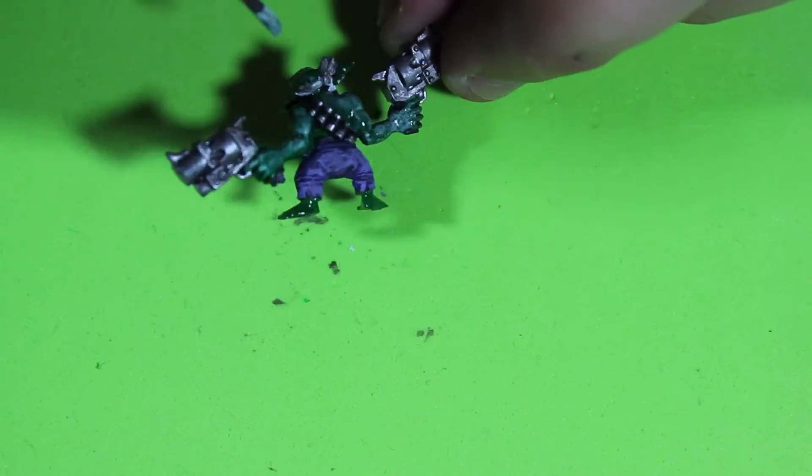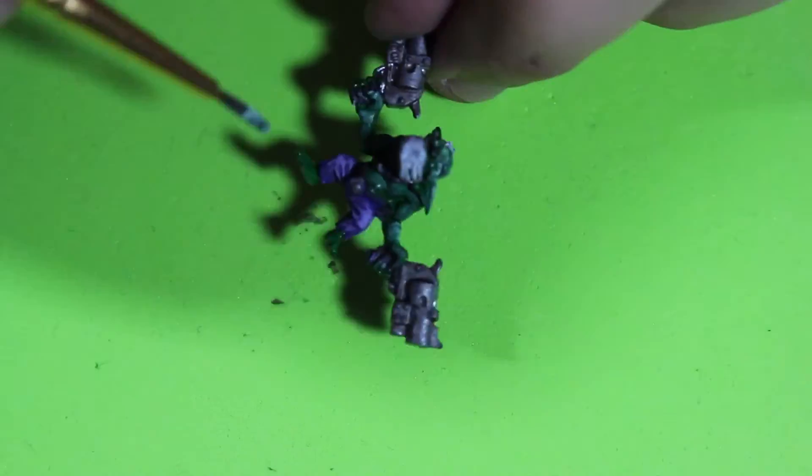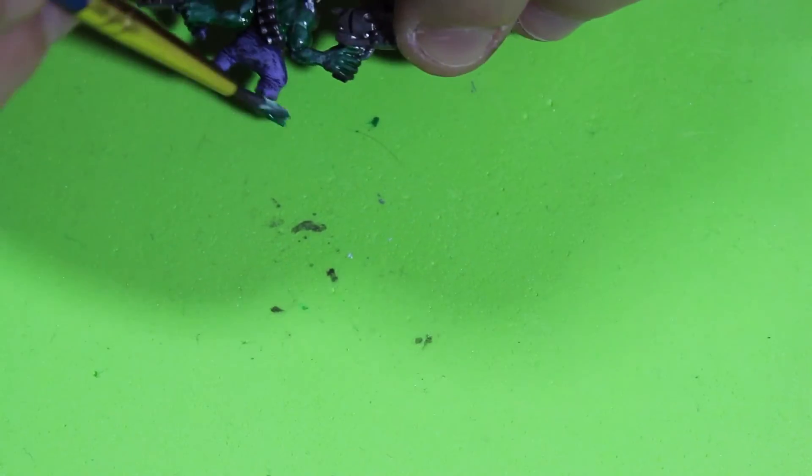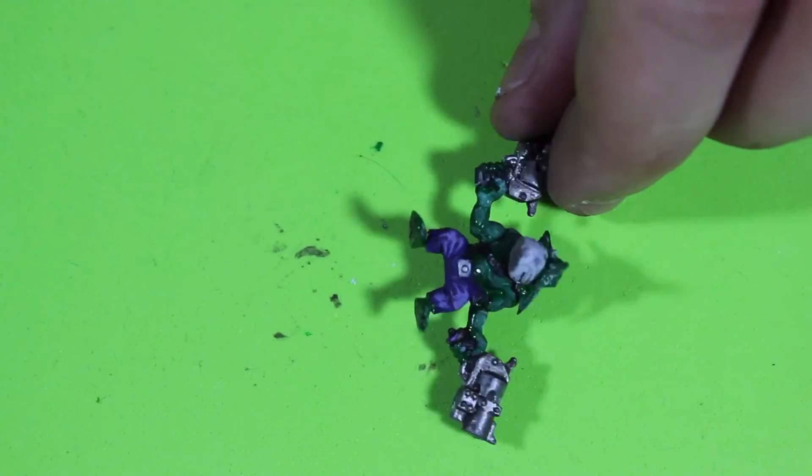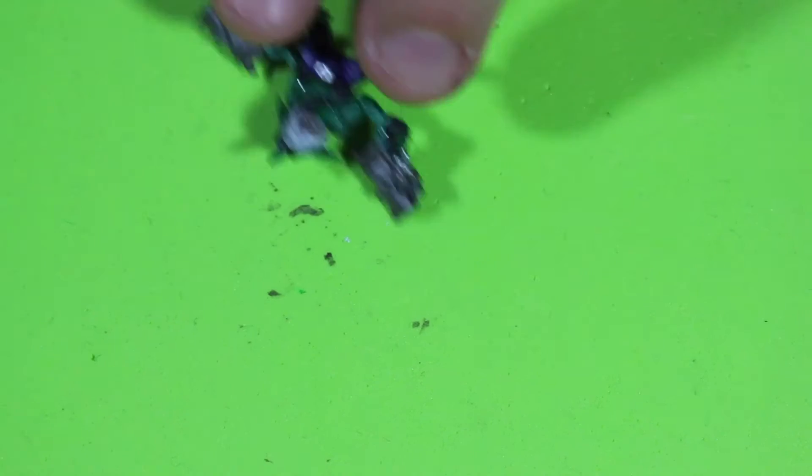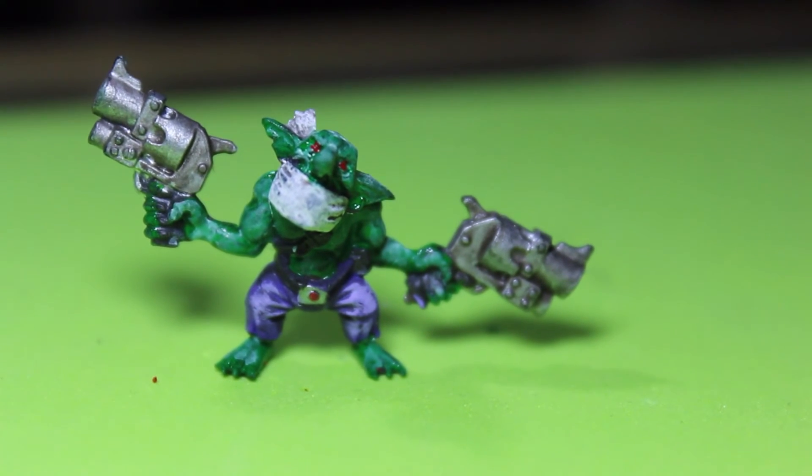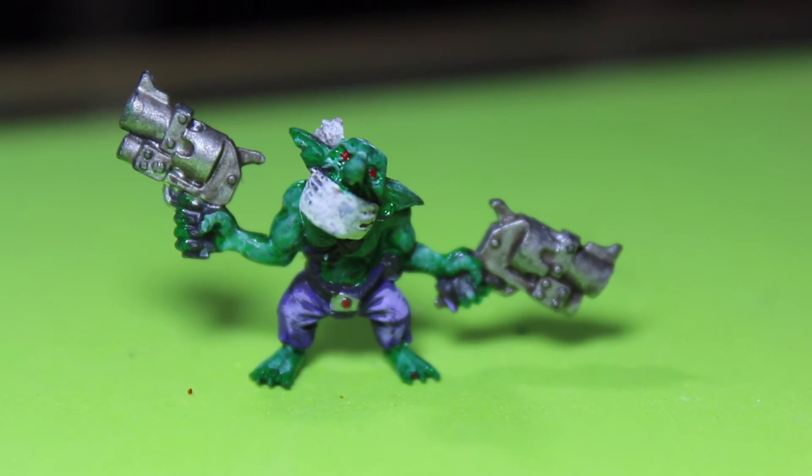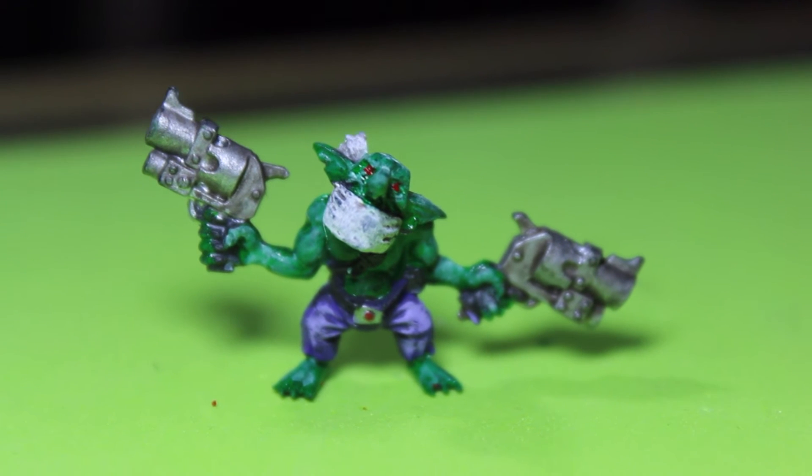The Testors color underneath is still kind of wet, so I moved around the dry brush of the lighter green and it turned out pretty nice. Then finally just a red for the eyes, and there you have it guys, this is my Gretchen with its two grunt blasters.